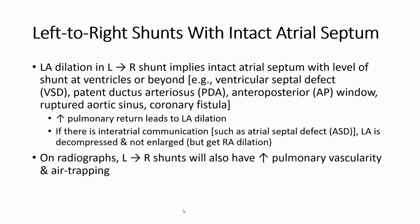Left atrial dilatation in left-to-right shunt with intact atrial septum can occur at the ventricular or beyond level — for example, ventricular septal defect (VSD), PDA, aortopulmonary window, rupture of the sinus of Valsalva, or coronary arteriovenous fistula. On radiograph, these will also show increased pulmonary vascularity and cardiomegaly.